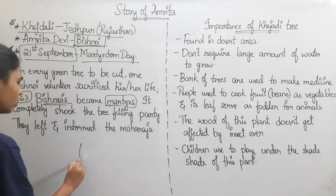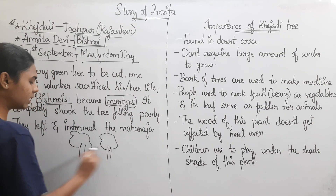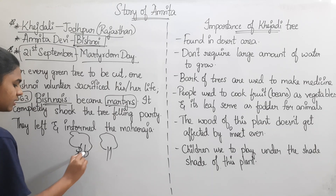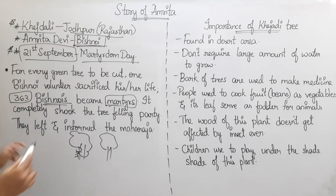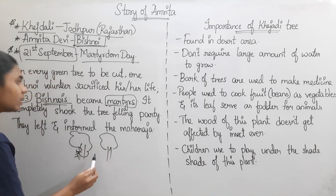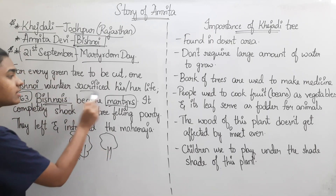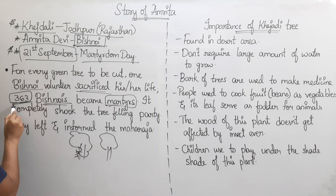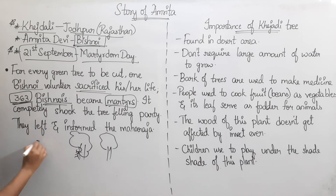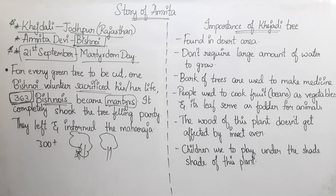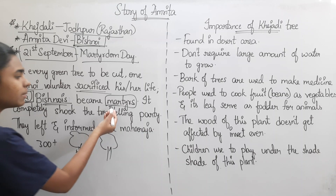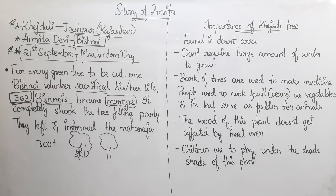One Bishnoi volunteer sacrificed their life for each tree. In total, 363 Bishnois sacrificed their lives. This completely shook the tree-felling party. They left and informed the Maharaja. This is the story of Amrita and the Bishnoi community's sacrifice to protect the Khejri trees.